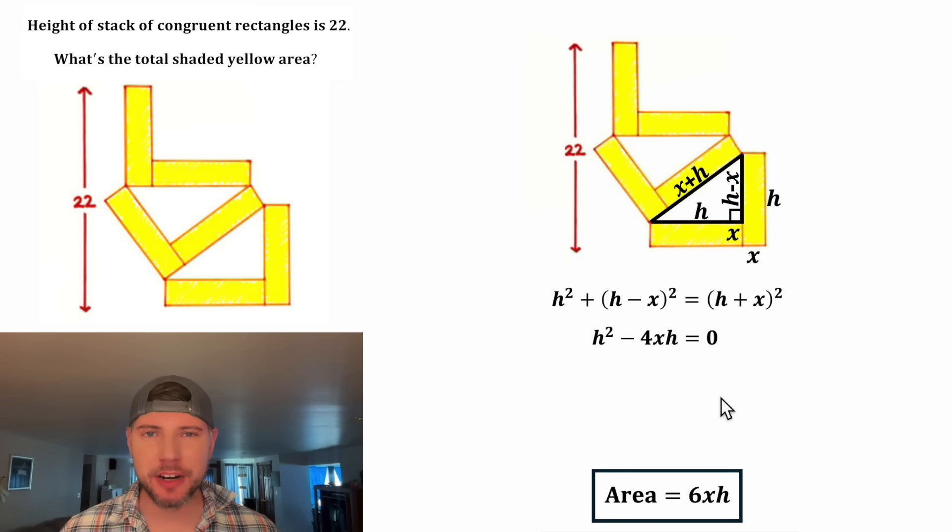So now we've got H squared minus 4XH equals zero. From here, each of these terms contains an H, so let's factor out H. H times what gives us H squared? Well, that's H. And then H times what gives us negative 4XH? That'll be negative 4X.